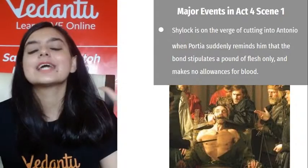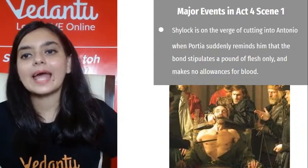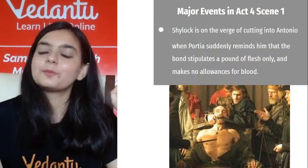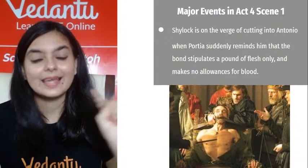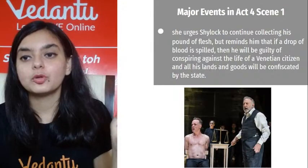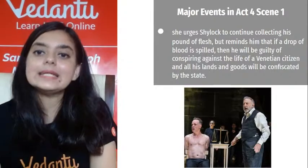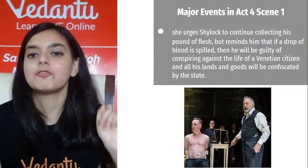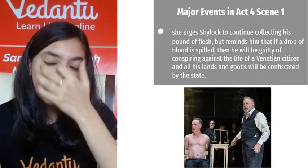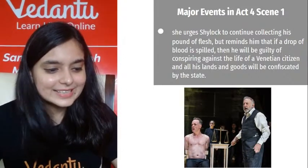At the same time, Portia suddenly reminds Shylock that the bond stipulates only a pound of flesh — there is no allowance for blood. If even a single drop of blood is spilled, he will be guilty of conspiring against the life of a Venetian citizen, and all his lands and goods would be confiscated by the state.